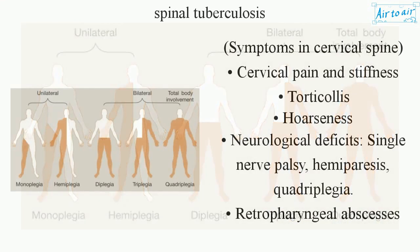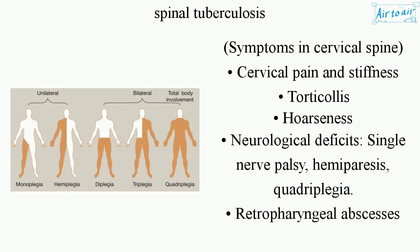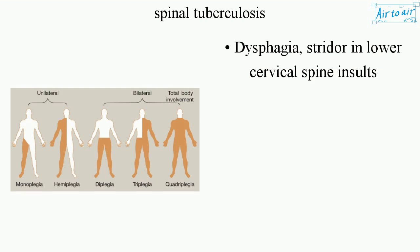Symptoms in the cervical spine include cervical pain and stiffness, torticollis, hoarseness, neurological deficits such as single nerve palsy, hemiparesis, and quadriplegia, as well as retropharyngeal abscesses causing dysphagia and stridor in lower cervical spine involvement.